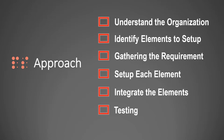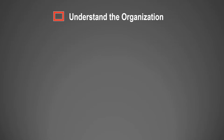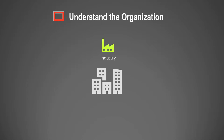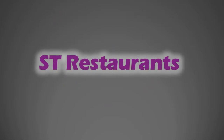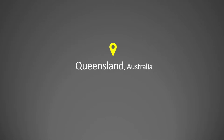This approach tells you to first understand the organization, then identify the elements to set up, and then gather the requirements around those individual elements. That makes the job a lot easier. Once we have the requirements, we set up all those elements individually, and once all of them are built we integrate them so the end-to-end process works, and then we test what we have built.